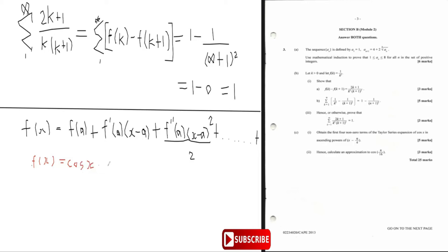So if f of x is cos x, then f of pi by four means plugging in x as pi by four. The cos of pi by four is cos 45 degrees, which is root two over two.